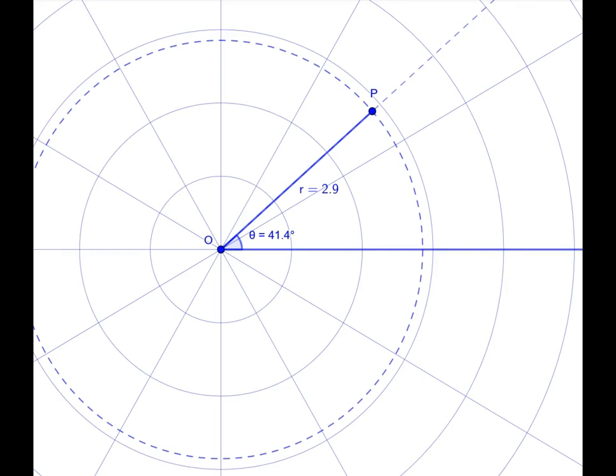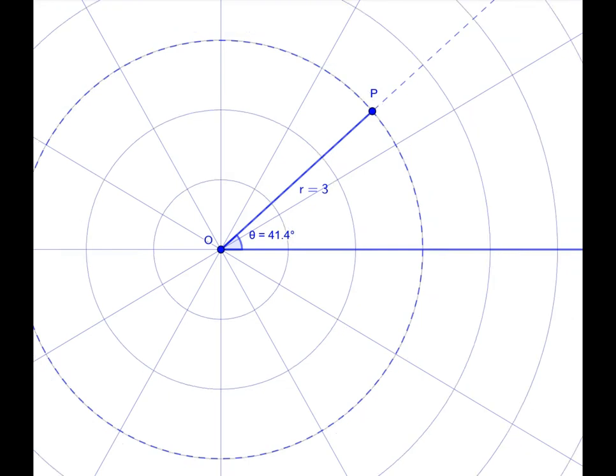And, although the distance from the origin to the point is still six Euclidean units, the coordinate value itself is three. And that's because we chose a scale of two.